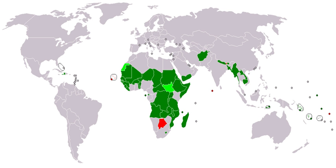There is an association between low income and high population growth. The development of a country is measured with statistical indexes such as income per capita, gross domestic product per capita, life expectancy, the rate of literacy, freedom index and others. The UN has developed the Human Development Index, a compound indicator of some of the above statistics, to gauge the level of human development for countries where data is available.